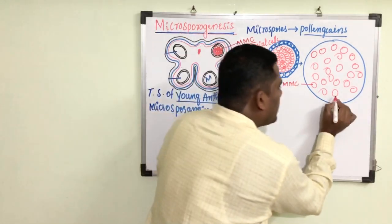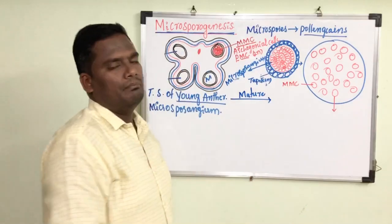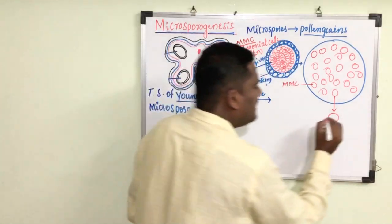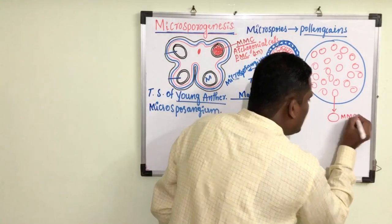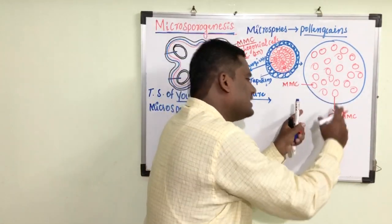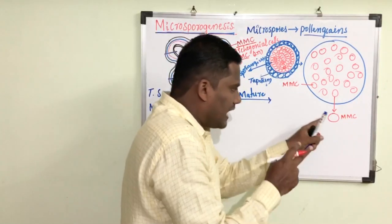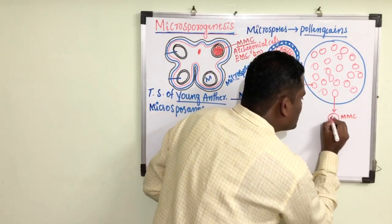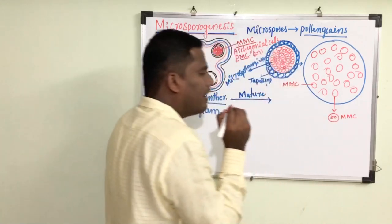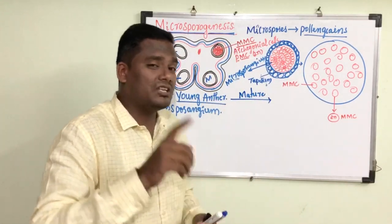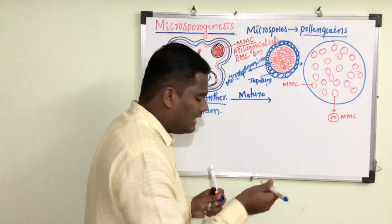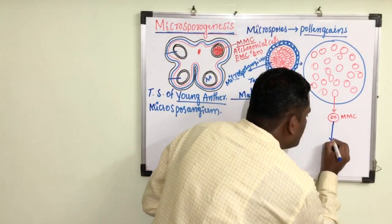Now let us take only one cell outside for our better understanding. This is the microspore mother cell — we focus on only one cell, though the same process is going on in all the cells. This microspore mother cell is diploid in nature, meaning it consists of two sets of chromosomes. Now this diploid microspore mother cell undergoes meiosis.